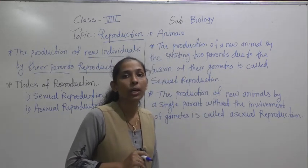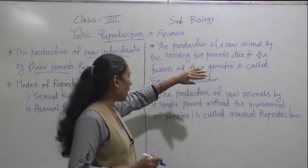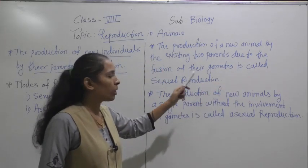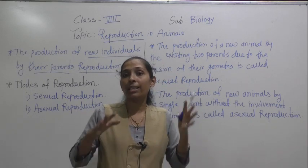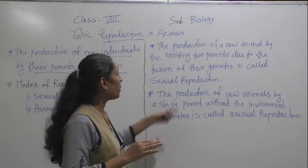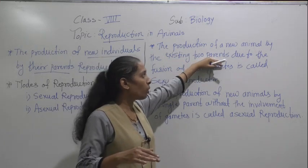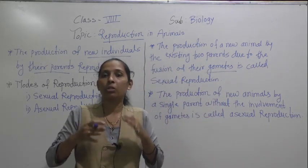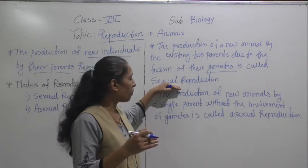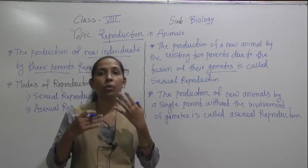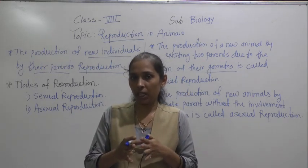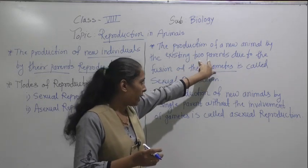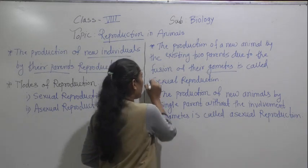Now let's discuss about what is meant by sexual reproduction. The production of a new animal by existing two parents due to the fusion of their gametes is called sexual reproduction. In sexual reproduction there is a necessity of two parents. With those parents, the new animal is produced due to the fusion of their gametes — special cells. The fusion of those special cells, which are called gametes, with the help of two parents — that mode of reproduction is called sexual reproduction.